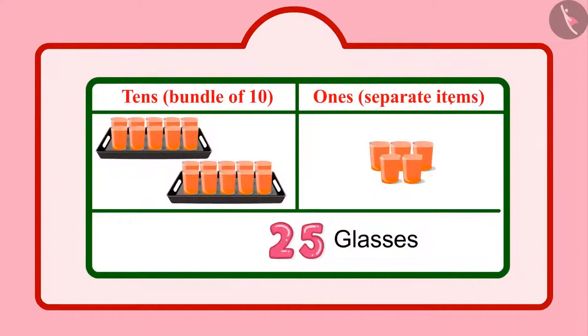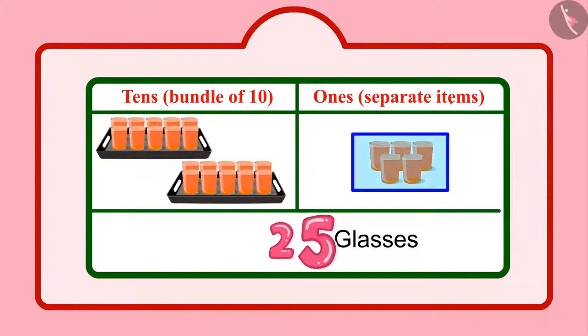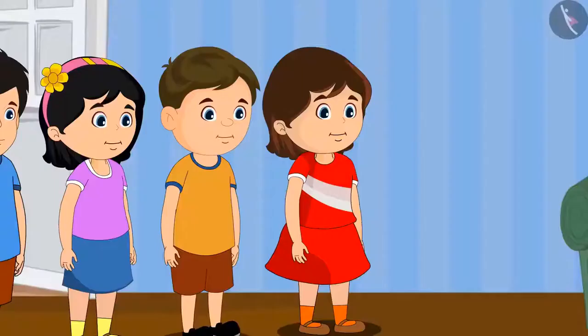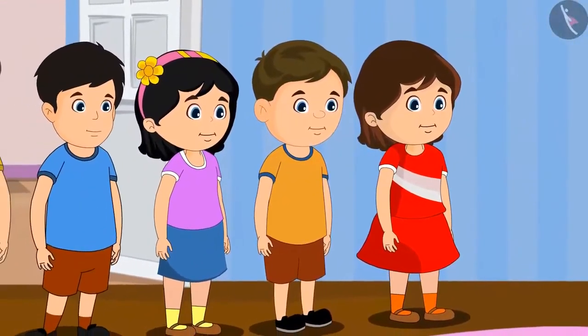Children, in these 25 glasses, 2 means 2 tens and 5 means 5 units.